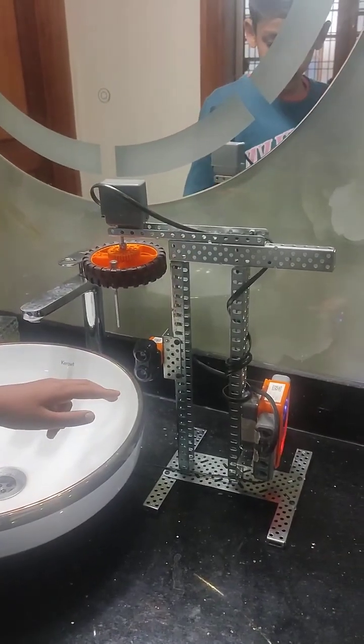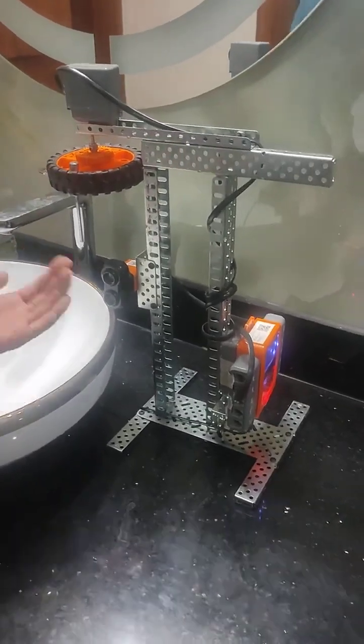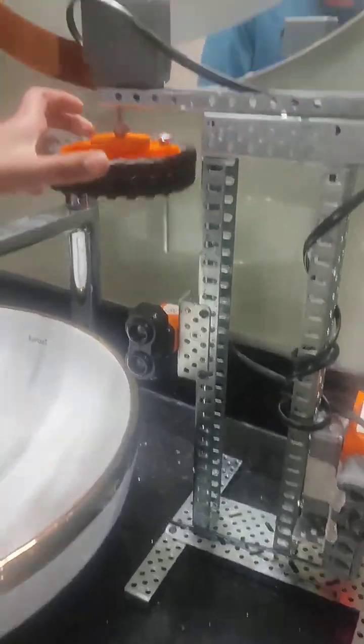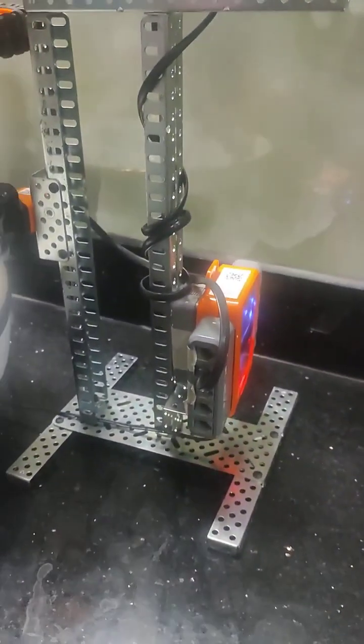So when I keep my hand here, the motor turns in a clockwise direction to turn the tap. And when I remove my hand, the motor turns in an anticlockwise direction to close the tap.